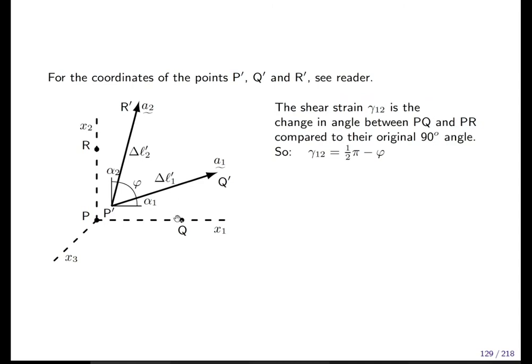The shear strain gamma_12 now is the change in angle. It is defined as the change in angle between PQ and PR. Those are the two line elements at the beginning. And how does this angle change? The change in angle is the original angle minus the new angle. So originally it was π/2 or 90 degrees minus φ, which is the angle between the vectors after the transformation. The first vector has an orientation change of angle α_1. The second vector has a change of orientation of α_2. Note that α_1 and α_2 are not identical in general. They can be completely different.